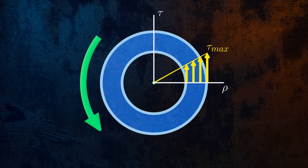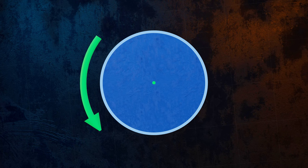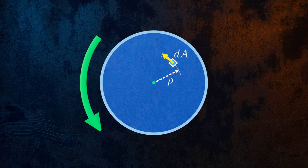Let's consider a small element within our cross section that has an area equal to dA and is located at a distance rho from the center of the cross section. The internal force acting on this element is equal to its area, dA, multiplied by the shear stress tau.